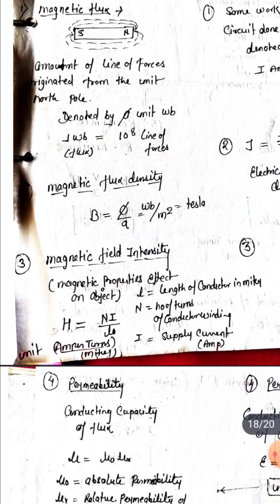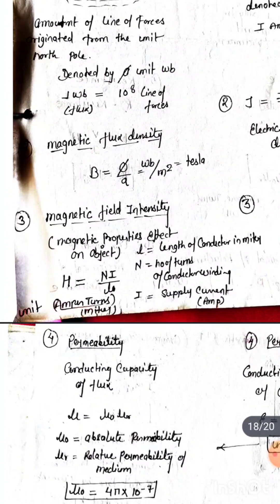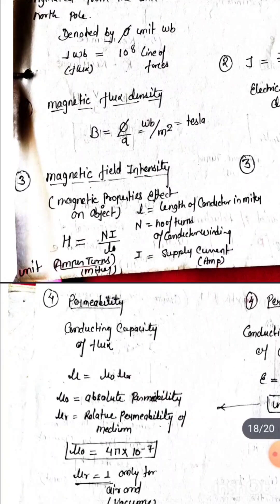The third difference is magnetic field intensity. Magnetic field intensity H is equal to NI upon L, where L is length of conductor, N is number of turns, I is supply current, and the unit is ampere turn per meter.